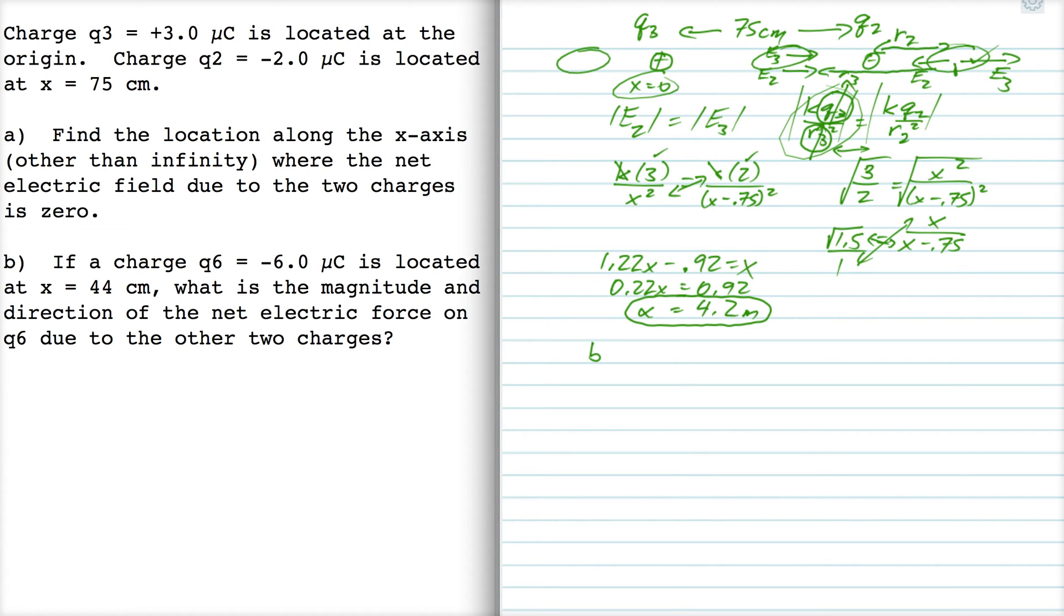Now, for the second part, we're putting a charge, some charge here, q6, located at x equals 44 centimeters. Okay, I'm going to redraw this, so we've got q3, we've got q6, and we've got q2.